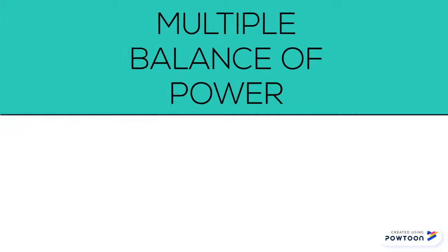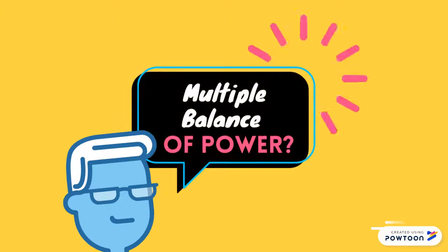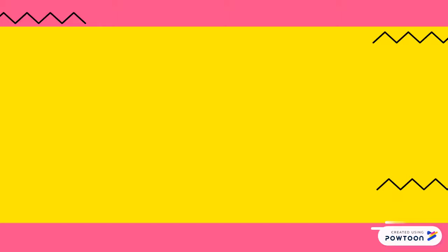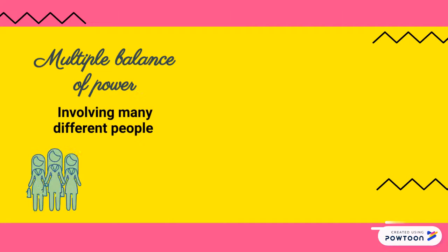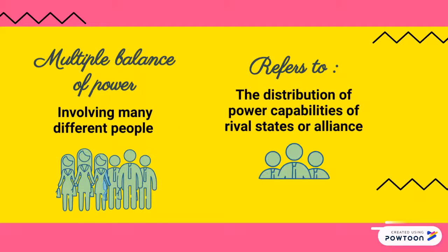The favourable condition of constitutionalism is multiple balance of power. What is multiple balance of power? Multiple balance of power involves many different people in the state and it refers to the distribution of power capabilities of rival states or alliances.